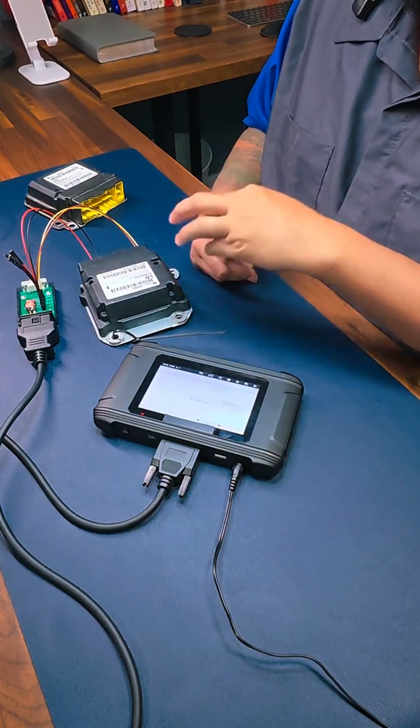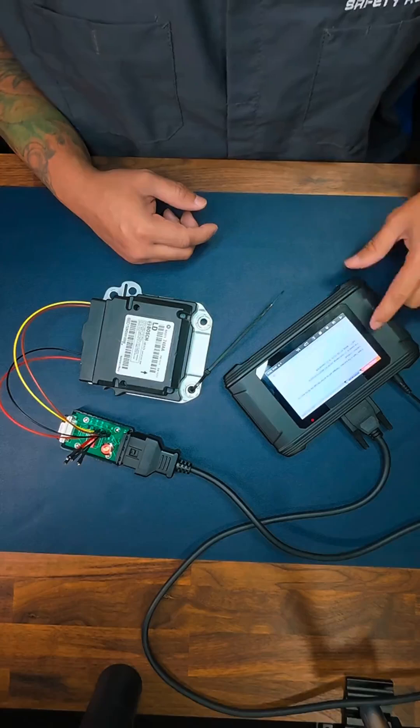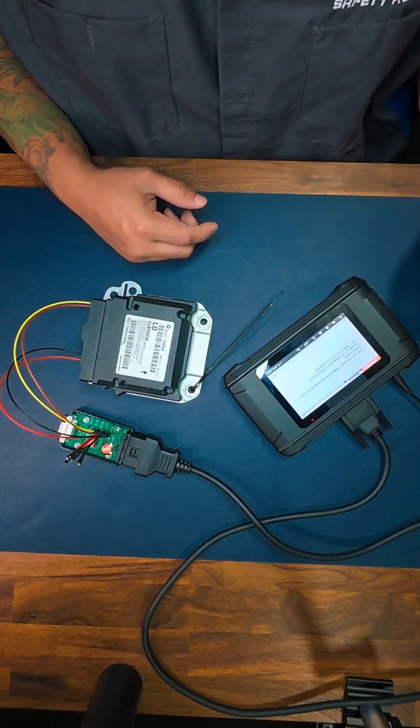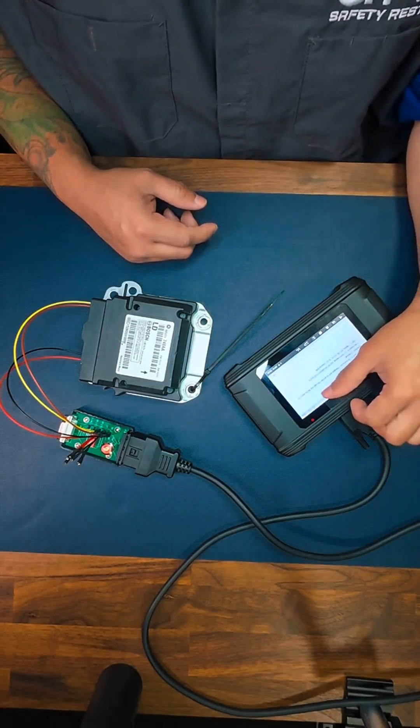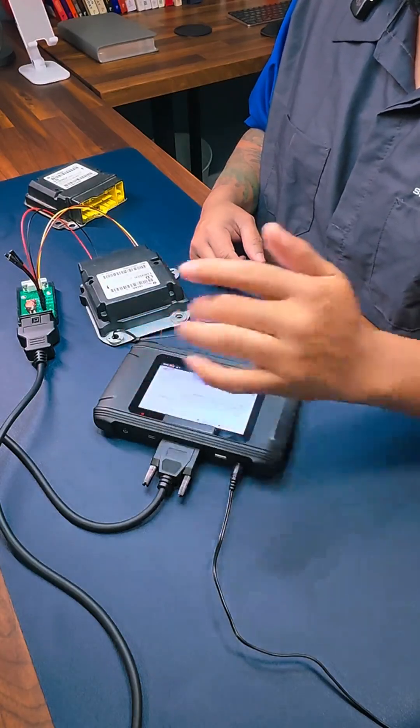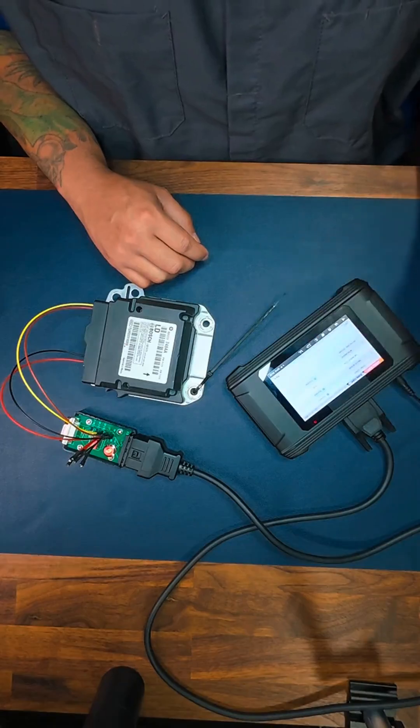And it says right here erase crash in file success. Changes will be written through the write EPROM function. Continue? Yes. Operation success. We have green all over the place, so the reprogramming of the module has been successful.